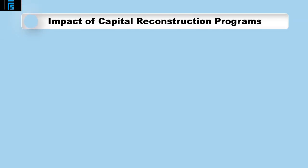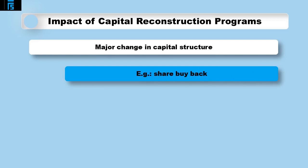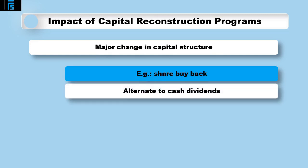Let us now analyze the impact that capital reconstruction programs have on free cash flow and dividends. We will define capital reconstruction as a major change in the capital structure of a company, both relating to equity and debt. Let us start with changes resulting in the lowering of a company's equity through a share buyback scheme. A share repurchase offers a practical alternative to the payment of a cash dividend and is performed when a business has accumulated a large amount of cash which it cannot effectively reinvest. When a company buys back its own shares in the market, its free cash flow is reduced immediately.